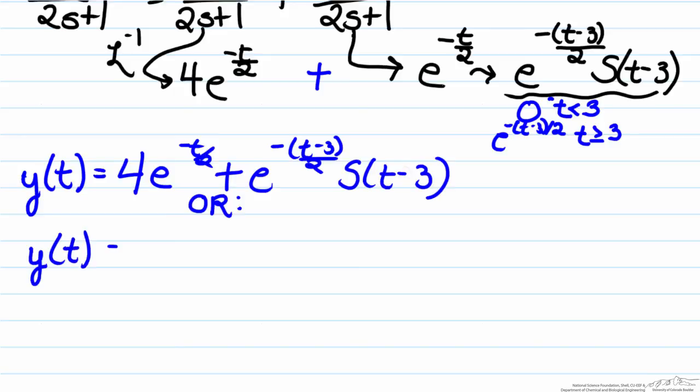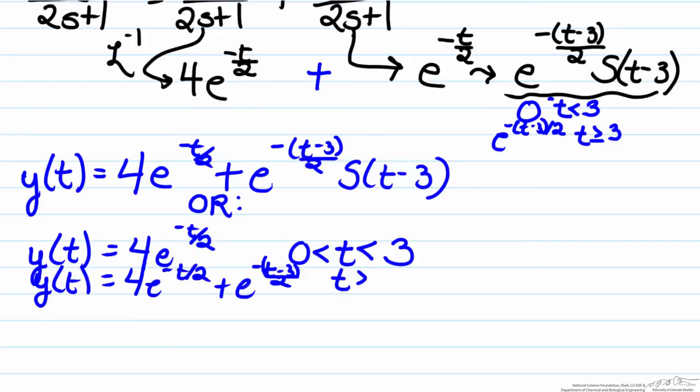or that y(t) equals 4e^(-t/2) for times in between zero, where we've implied a change has occurred, to until the dead time ends, means that time equals 3, and then the entire function for all other times.